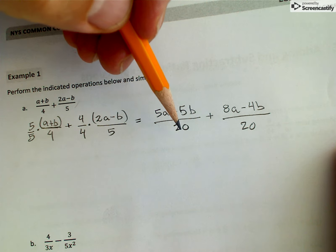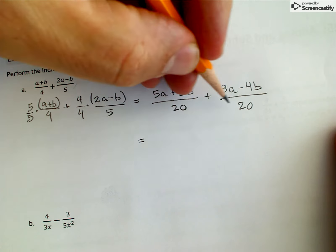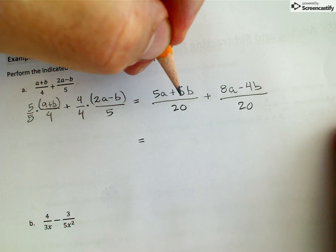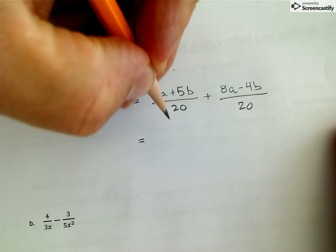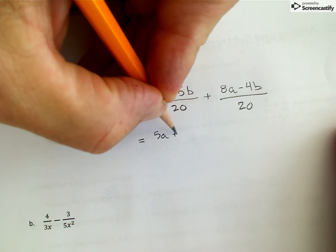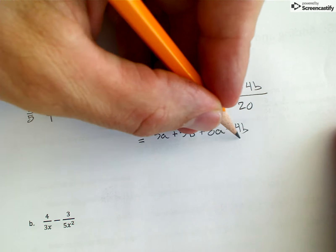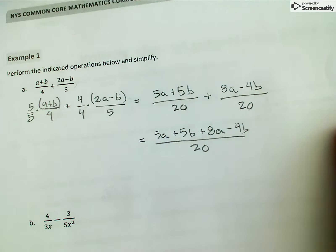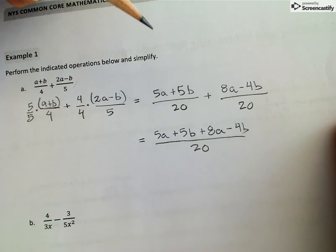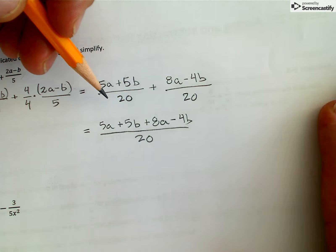Now because I have a common denominator, I can add the tops and I get 5a plus 5b plus 8a minus 4b all divided by 20. There I did my fraction addition and I've got a single rational expression now.